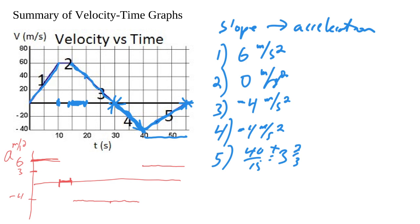I drew these as discrete bars because our calculations went from 6 to 0 to negative 4, et cetera. In real life, this would not all of a sudden go from speeding up to constant speed — there would be a gradual curve. We're just keeping it simple, but you can make these a little more gradual and connect them.